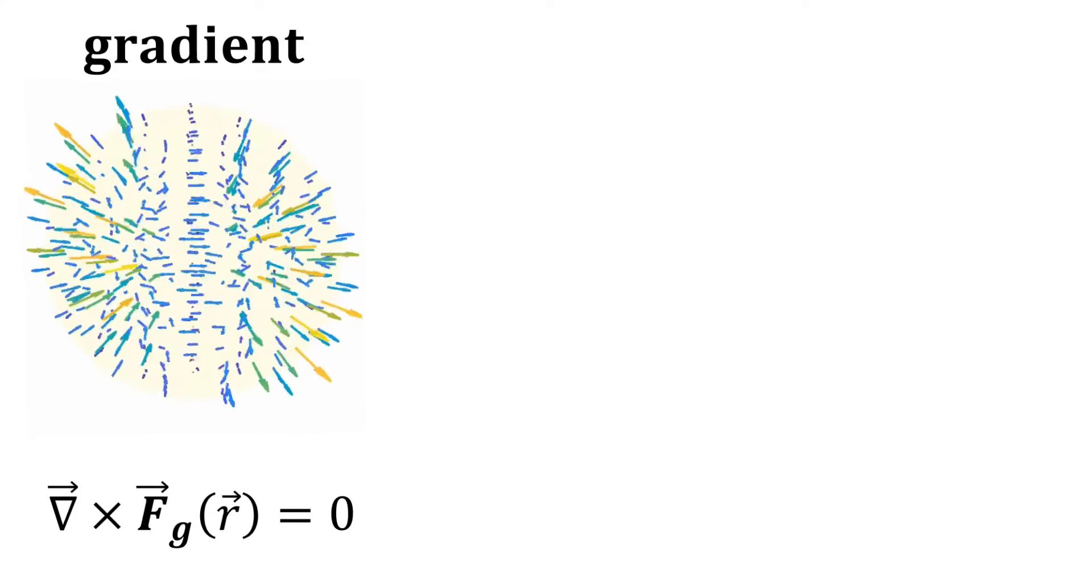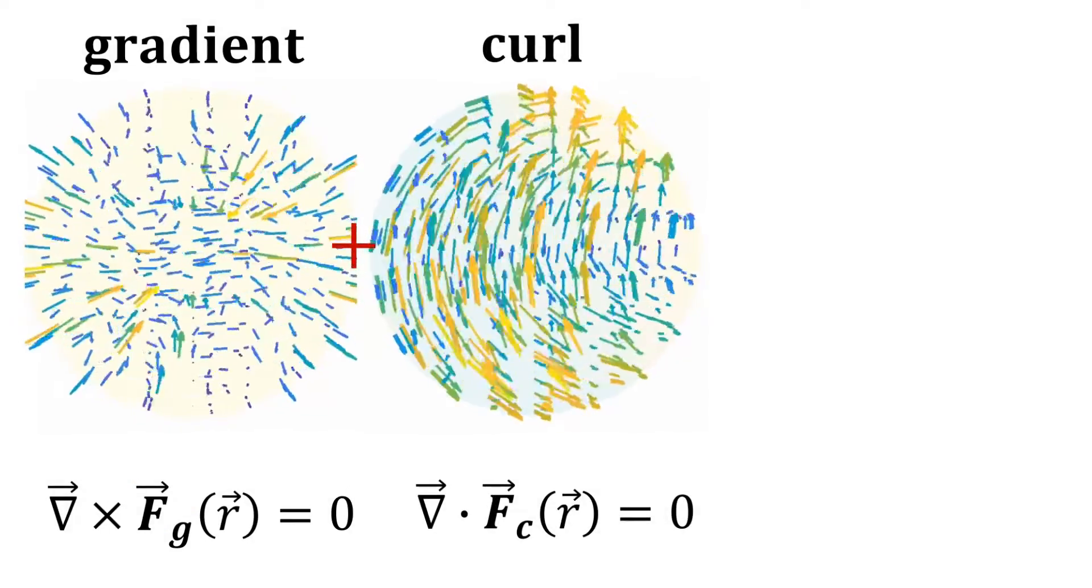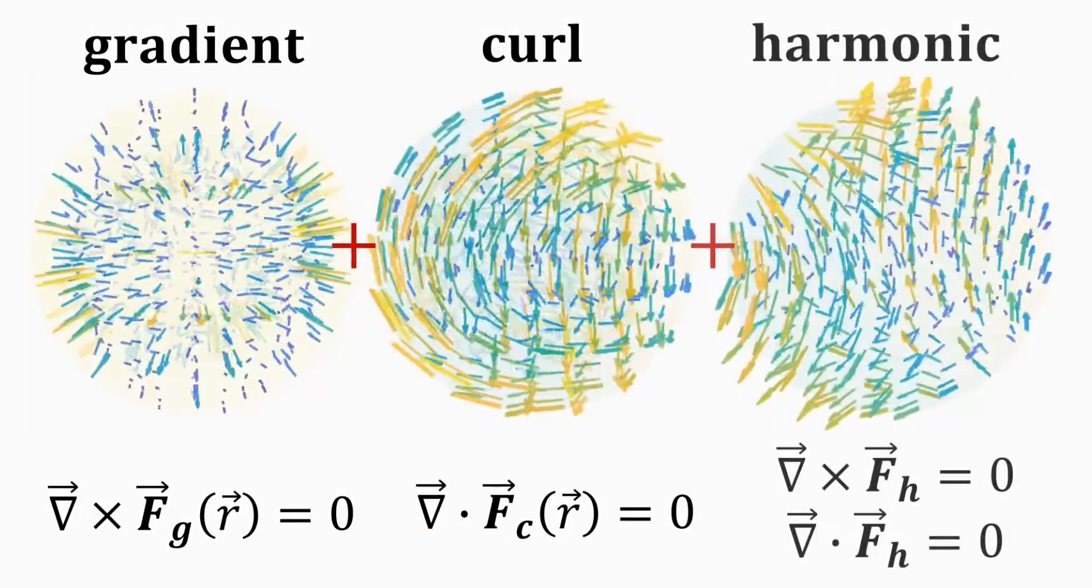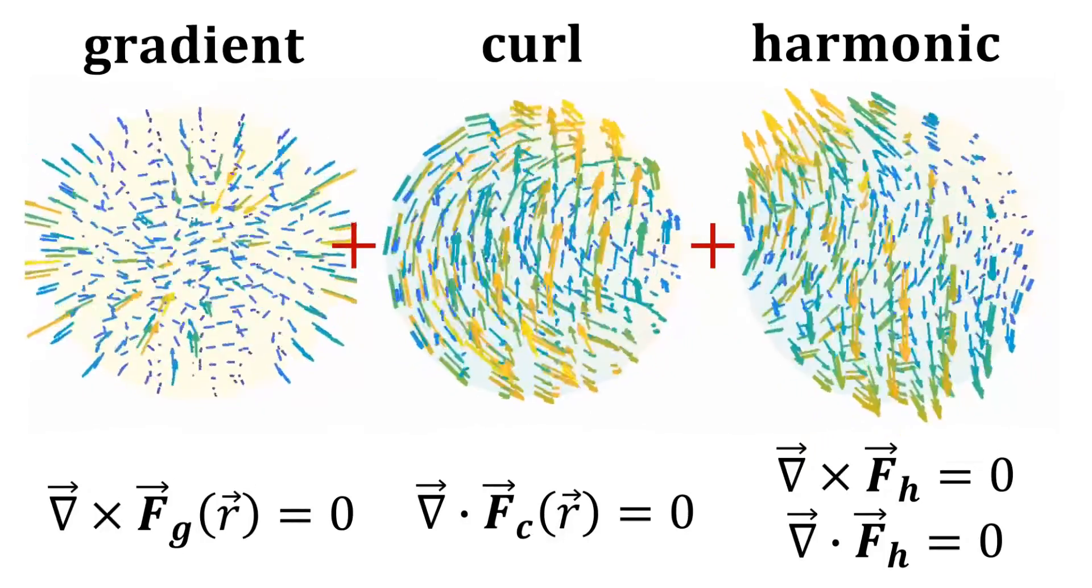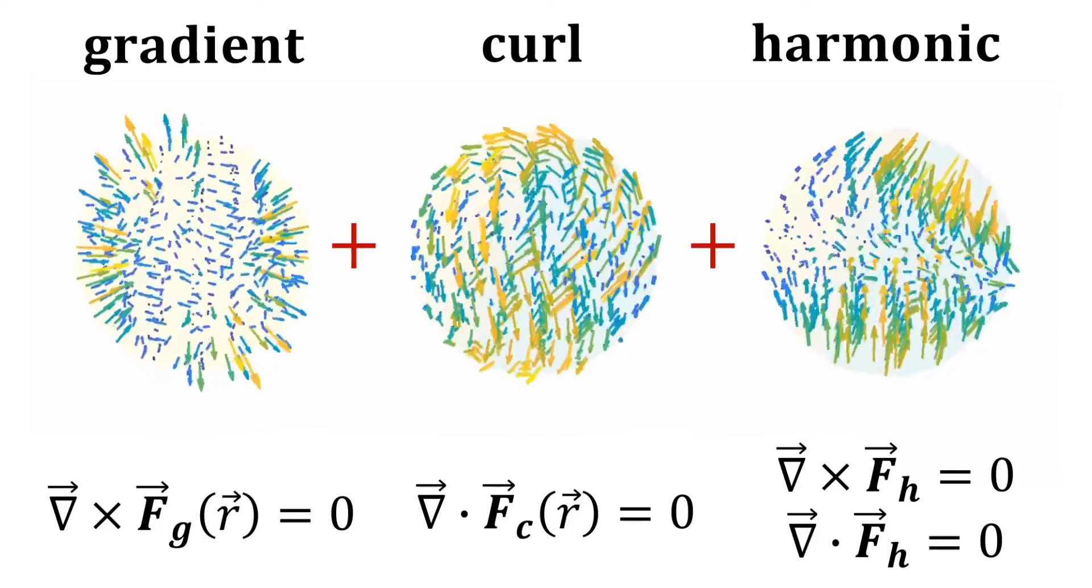In particular, the curl-free component is associated to a gradient field, and the divergence-free component is associated with a curl field, while the curl and divergence-free component is the harmonic field of the Laplacian equation. Let's begin.